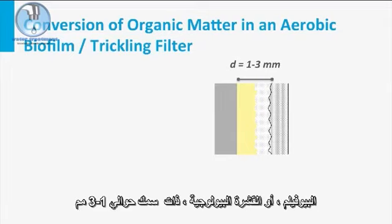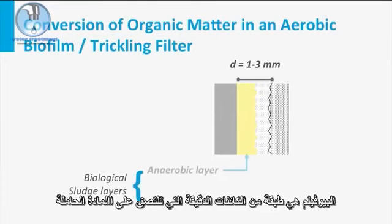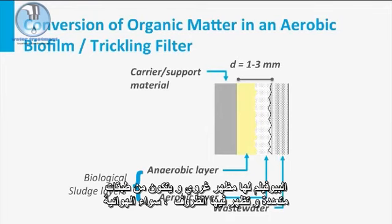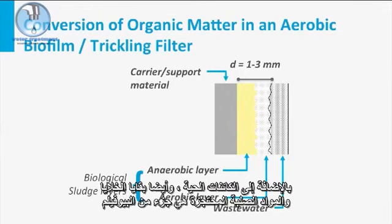The biofilm, or biological skin, is about 1 to 3 mm in thickness. The biofilm is a layer of microorganisms attached to the inert support material. The biofilm has a slimy appearance and consists of multiple layers in which both aerobic and anaerobic conditions appear. In addition to living organisms, also cell remainders and entrapped solids are part of the biofilm.